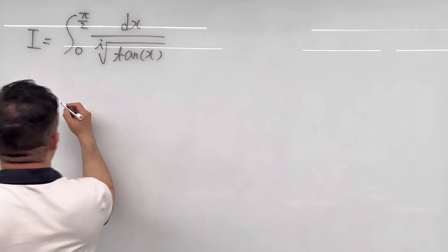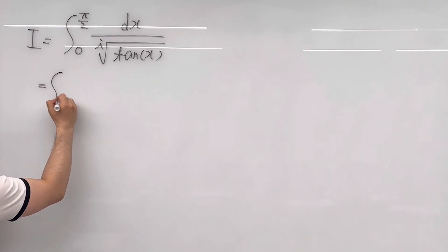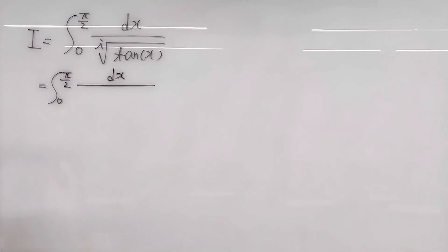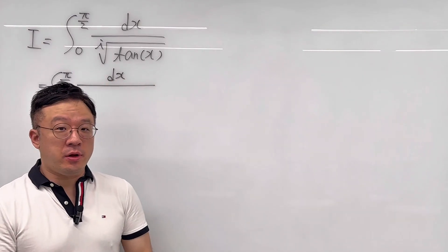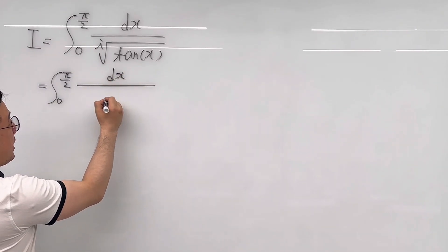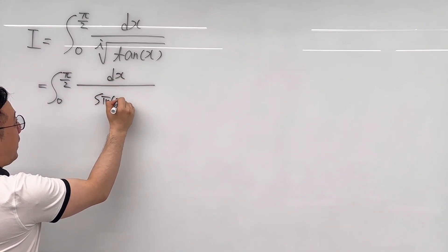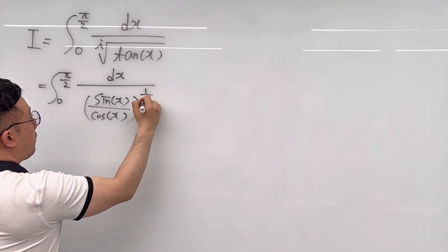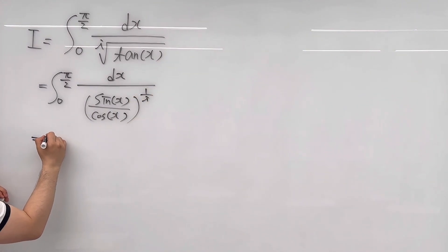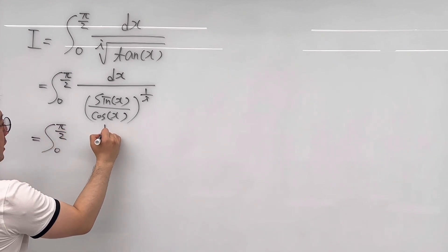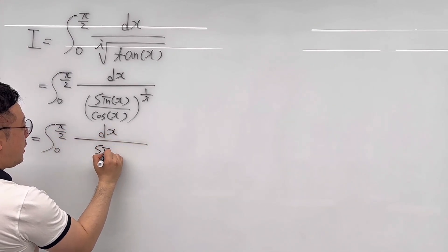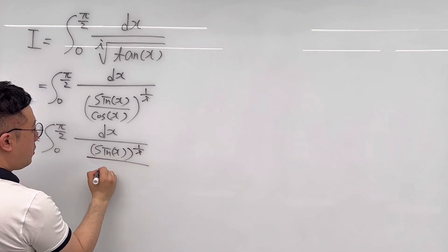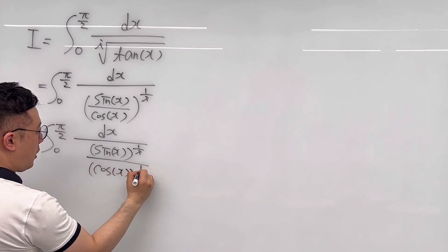Let me rewrite this integral from zero to pi over two. Since tangent is sine over cosine, and the i-th root means an exponent of one over i, we can rewrite the denominator as sine of x over cosine of x, the entire thing to the power of one over i. This is the same as the integral from zero to pi over two of dx over sine of x to the power of one over i, divided by cosine of x to the power of one over i.